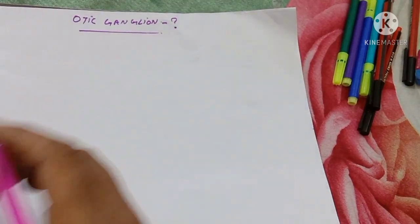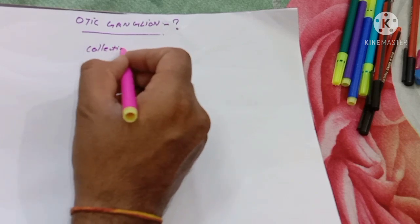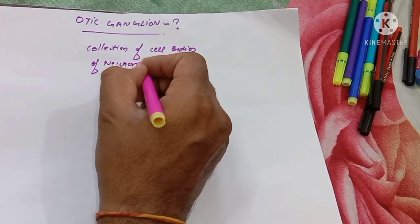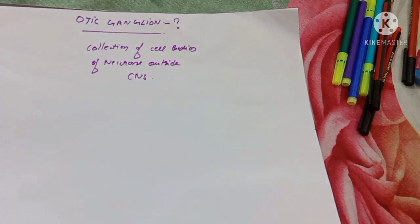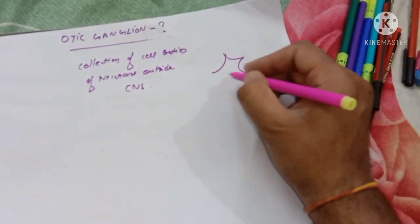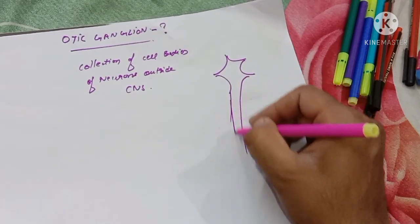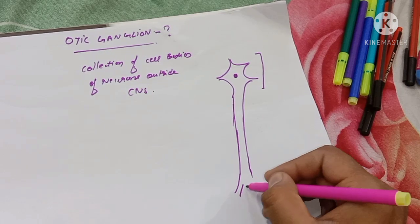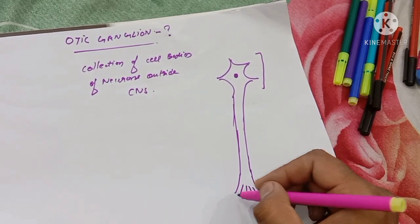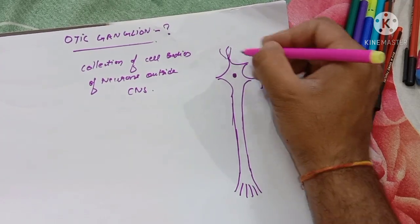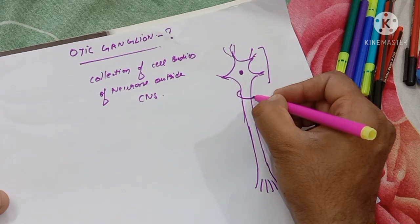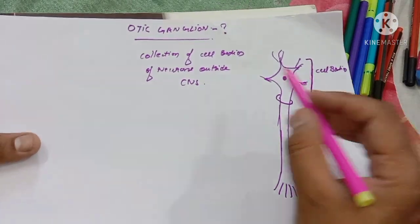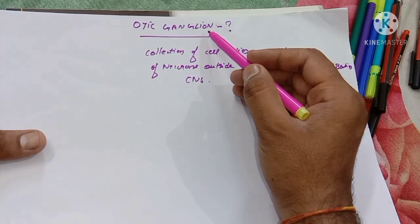What do you mean by the term ganglion? Ganglion is a collection of cell bodies of neurons outside the CNS, that is the central nervous system. A neuron has an upper portion called the cell body, an axon, terminal ends, a nucleus, and dendrites. The collection of cell bodies of neurons outside the central nervous system is called a ganglion.